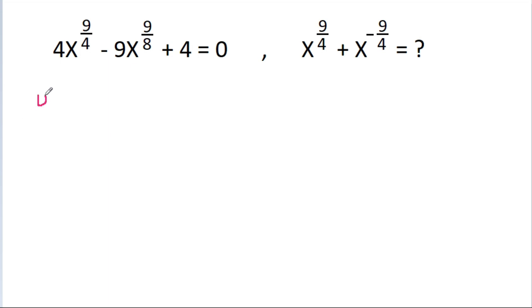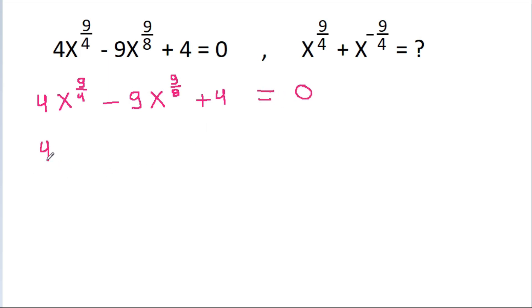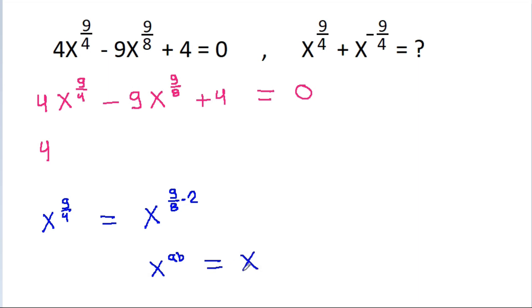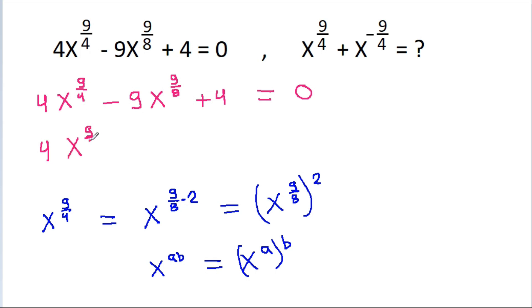We have 4 times x power 9 by 4 minus 9 times x power 9 by 8 plus 4 is equal to 0. Now, x power 9 by 4 is equal to x power 9 by 8 times 2. And since x power (a·b) equals (x power a) power b, this gives us x power 9 by 8 squared. So we rewrite the equation as 4 times (x power 9 by 8) squared minus 9 times x power 9 by 8 plus 4 is equal to 0.